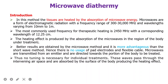The heating effect is produced by the human body by absorbing microwave energy during treatment. Where we want to treat the tissues, there we can send the microwave. By absorbing the microwave, the heat energy is produced. Compared to shortwave diathermy, the microwave diathermy produces better results and it is more advantageous than shortwave diathermy.